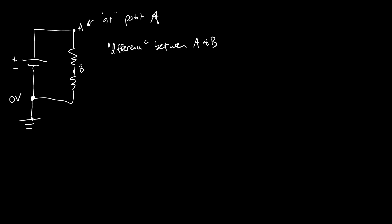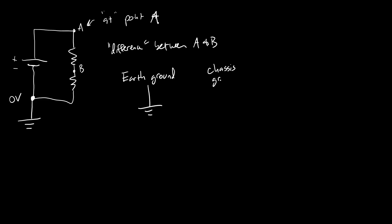There are actually a couple of different symbols you might see used for ground. The one I've been drawing literally means earth ground — technically that means building wiring where you literally have a copper rod or metal pipe driven into the ground that you are electrically connected to, acting as a charged reservoir. That is different from chassis ground, which is used when your circuit is grounded to the metal chassis of a vehicle that is not electrically connected to ground. And depending on which textbook or website you look at, you might see a triangle symbol used for signal, analog, or digital ground.